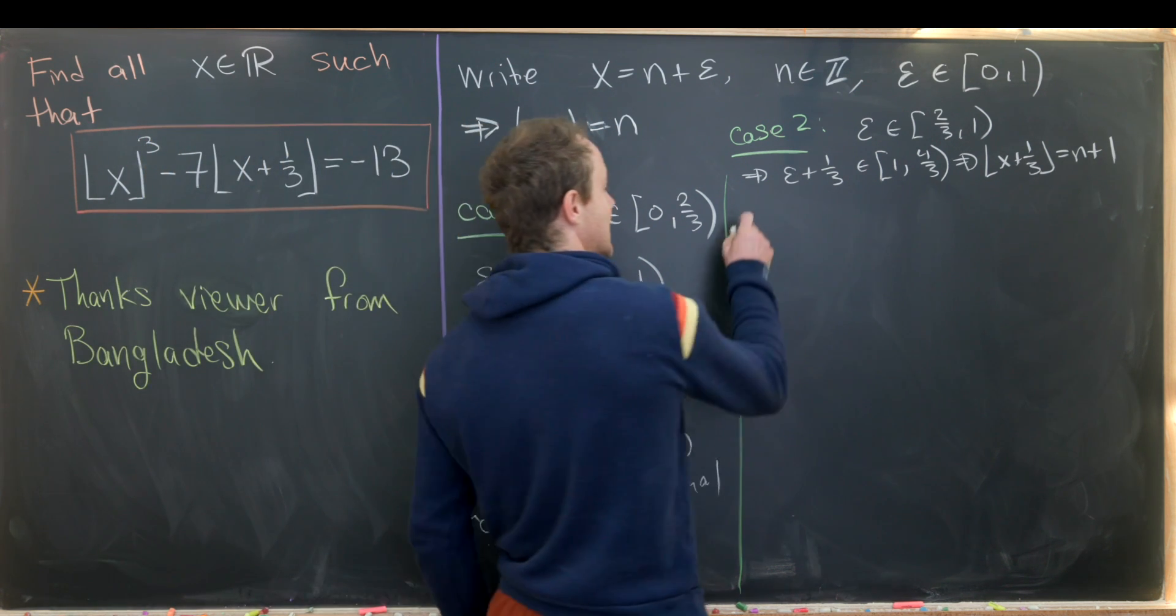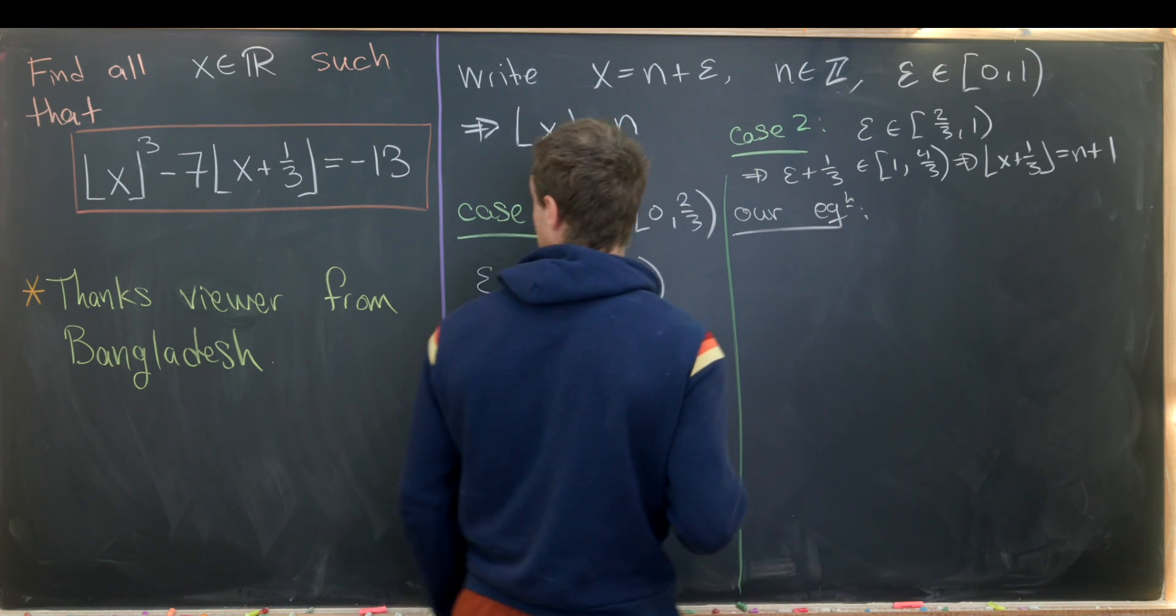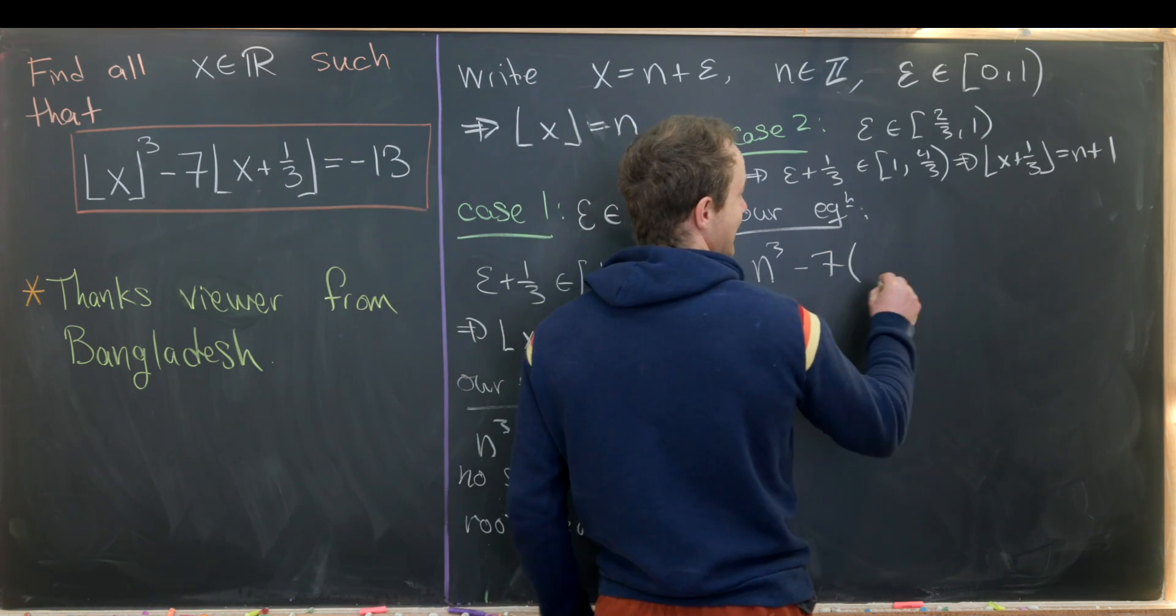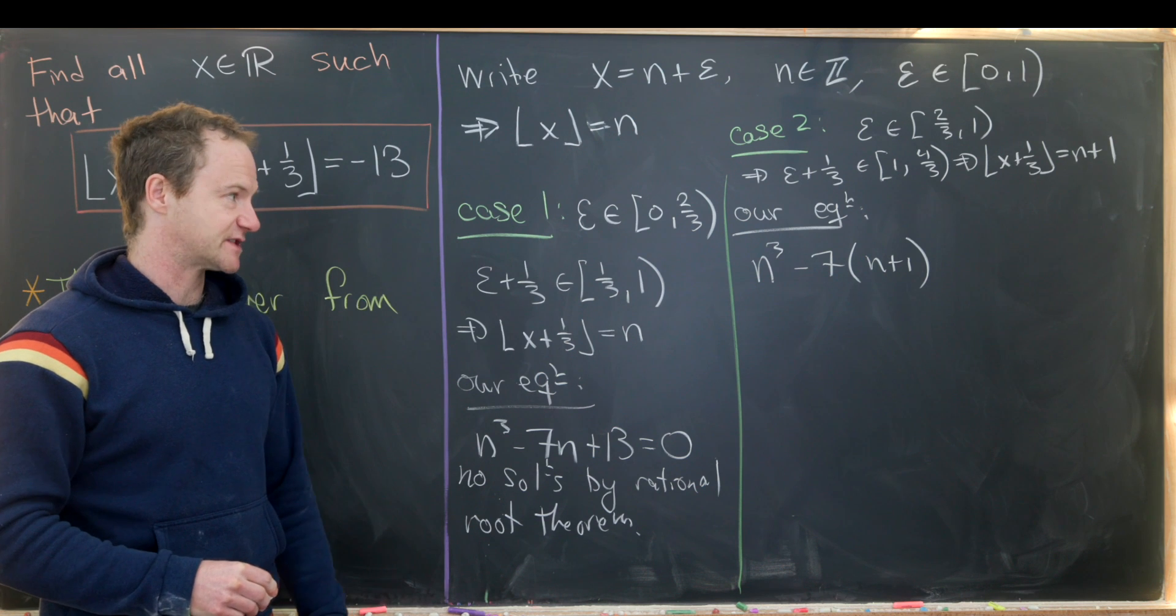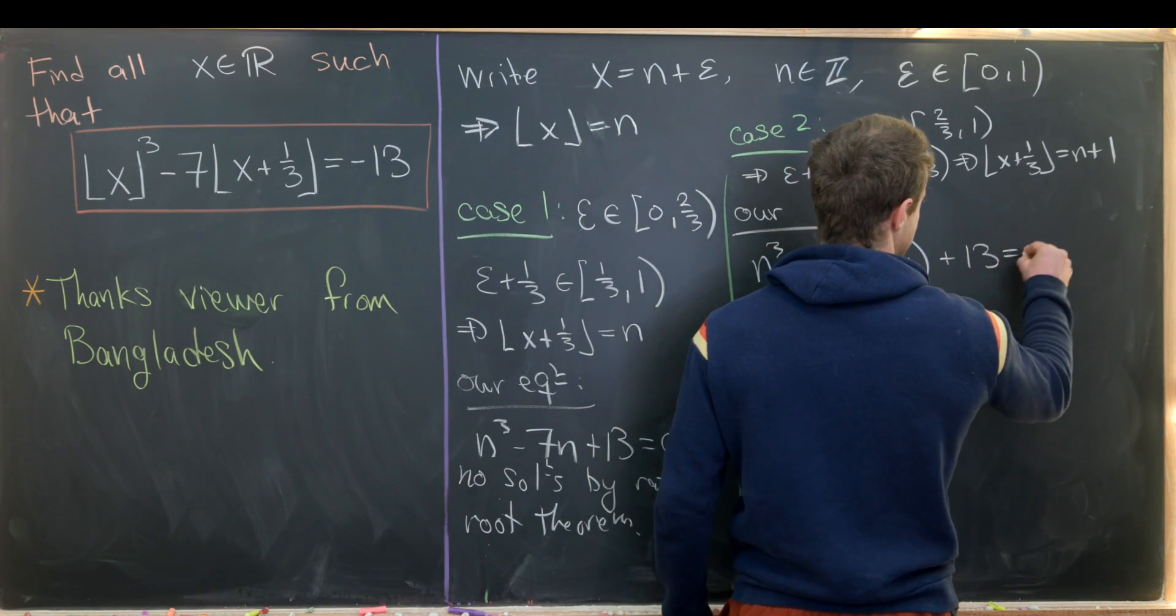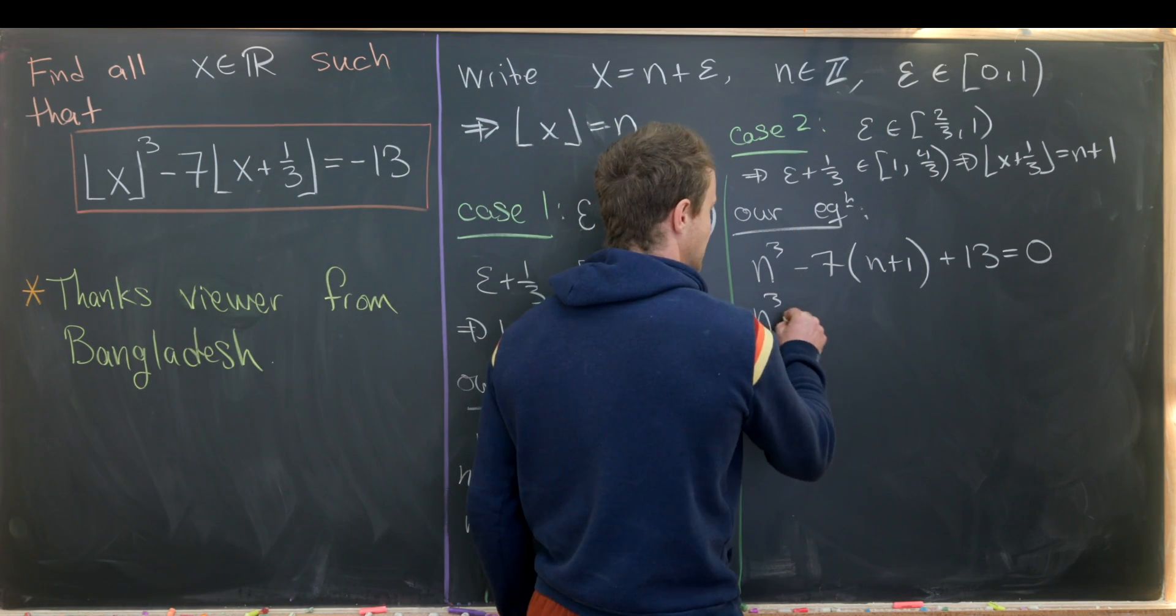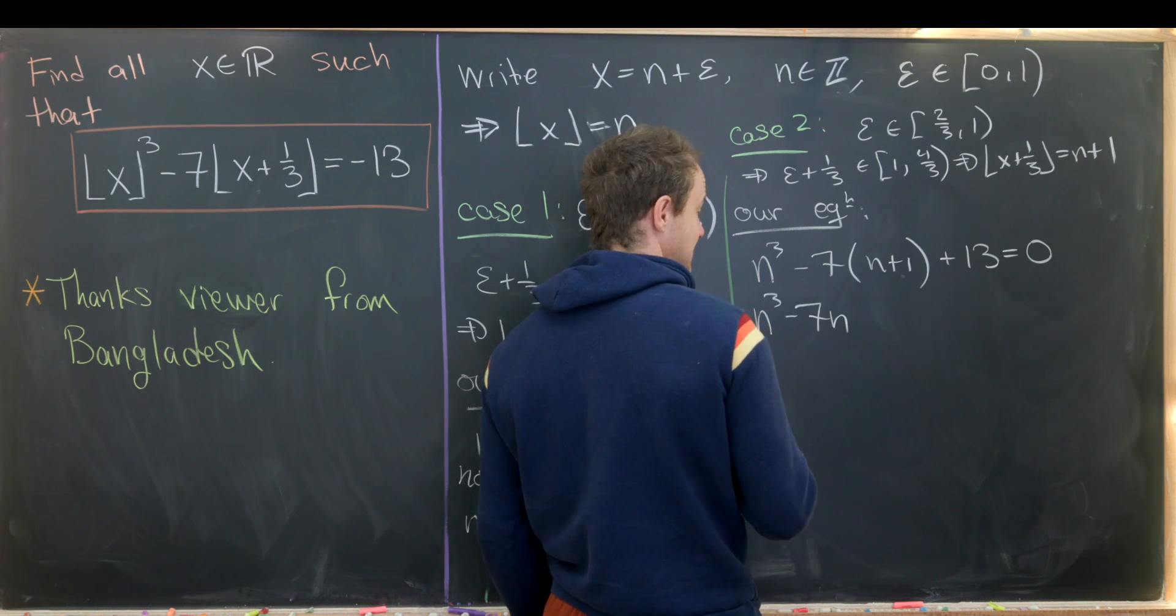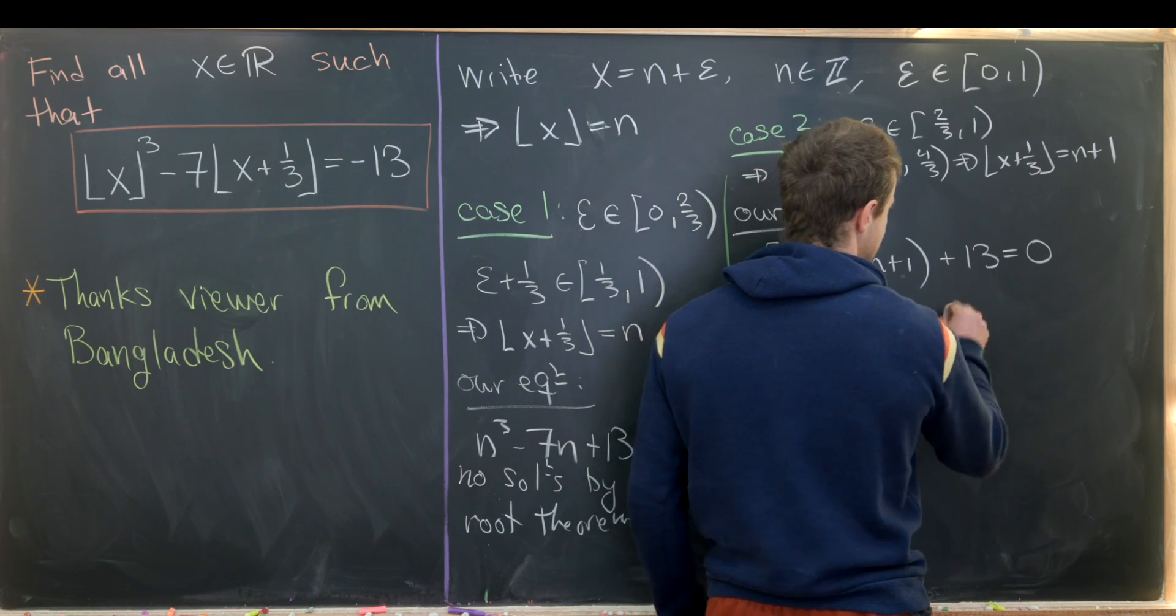And so now again, we can rewrite our equation using this data. And now we have n cubed from this minus 7 times n plus 1. Because again, that floor of x plus third is n plus 1 equals negative 13. But I'll write this as plus 13 equals zero. But now we can rewrite this as n cubed minus 7n. Then we have minus 7 plus 13. And so in the end, that's going to give us plus 6 equals zero.